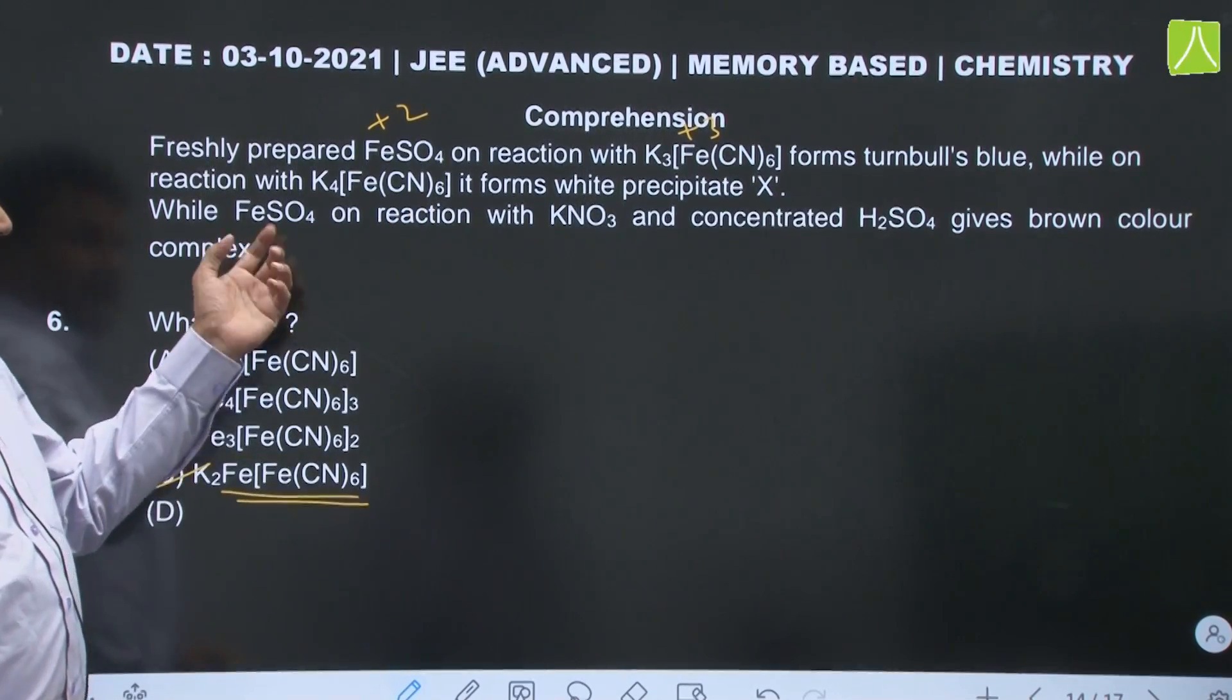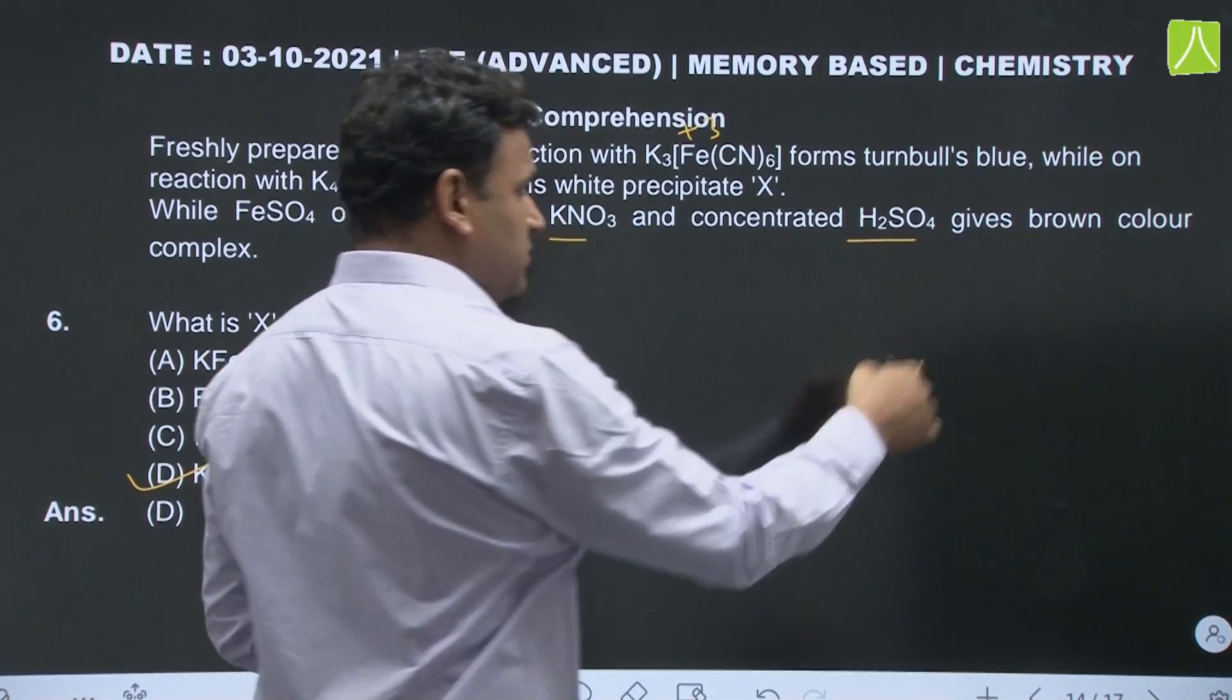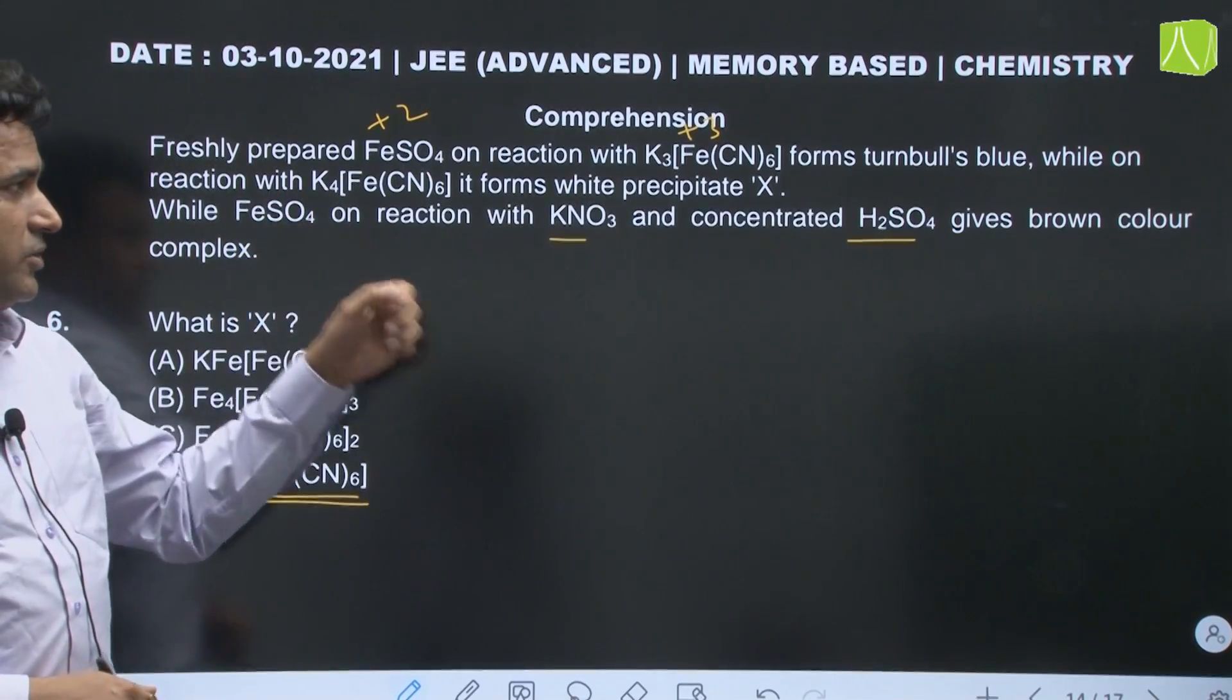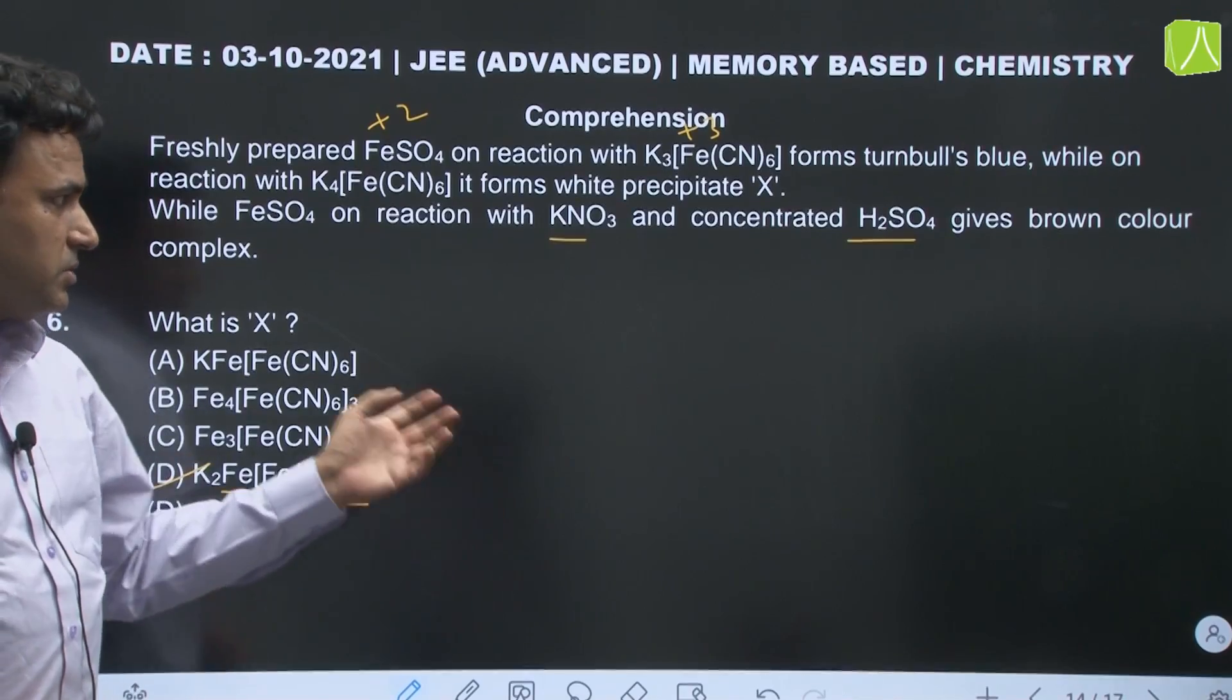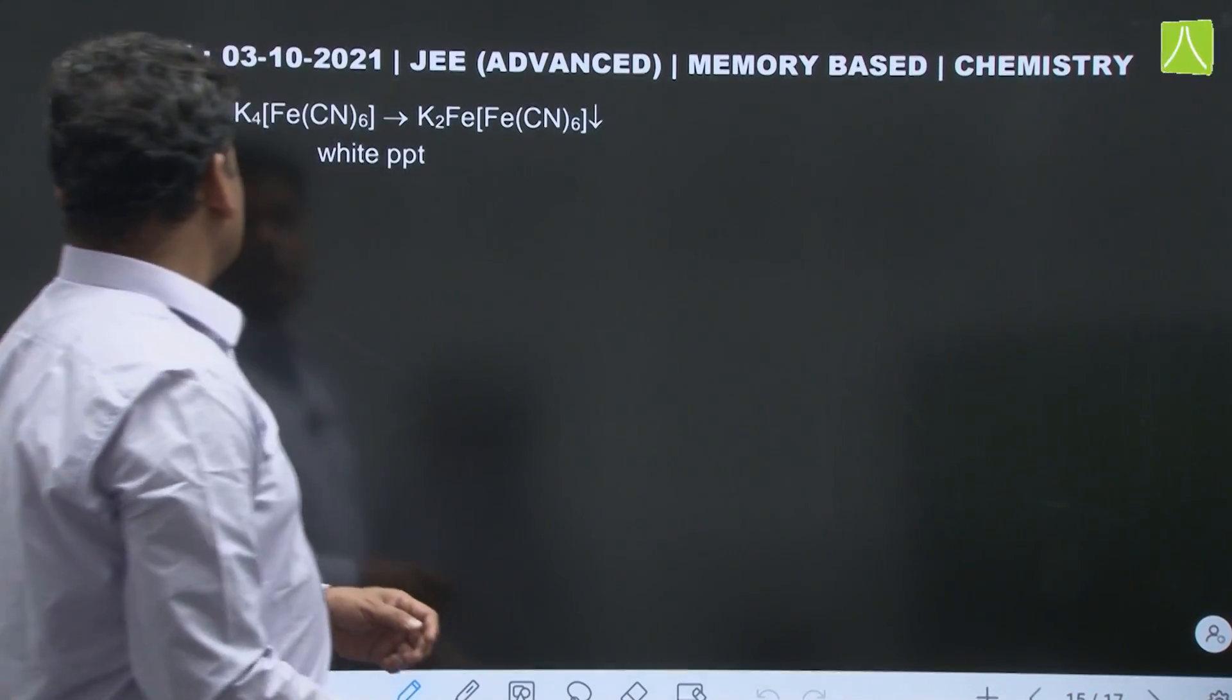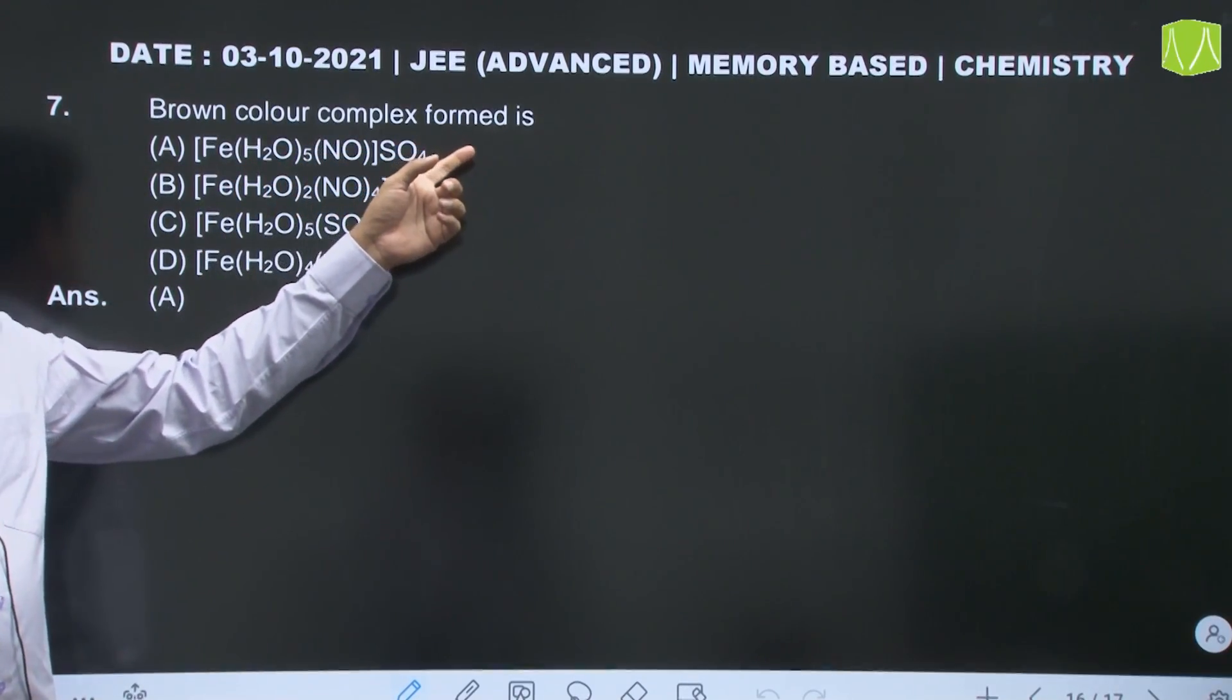Now when ferrous sulfate on reaction with potassium nitrate and concentrated sulfuric acid - that is brown ring test we all know - this reagent nitrate in acidic medium on reaction with ferrous is going to give us brown color. Brown color is brown ring complex. So the next question is what is this brown color? What is the composition of the brown color?